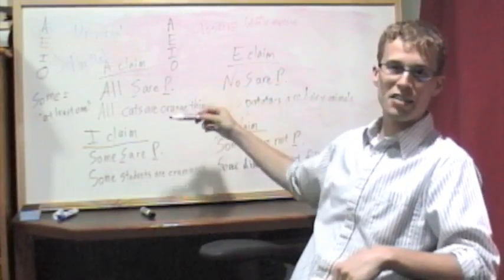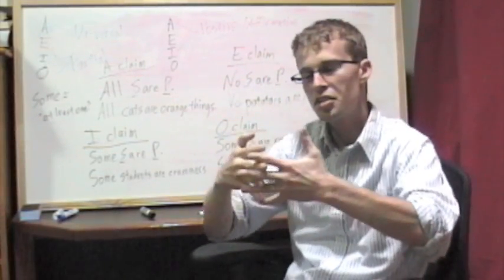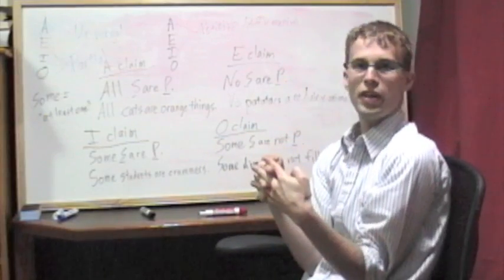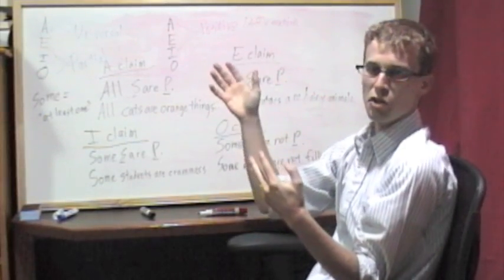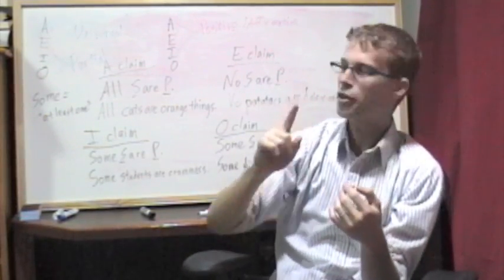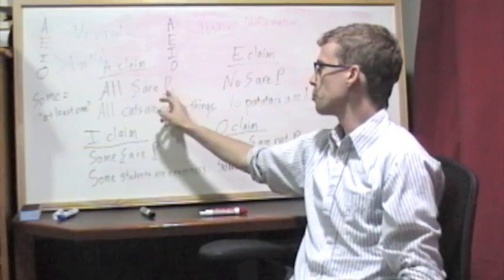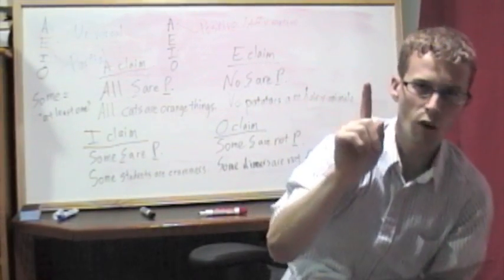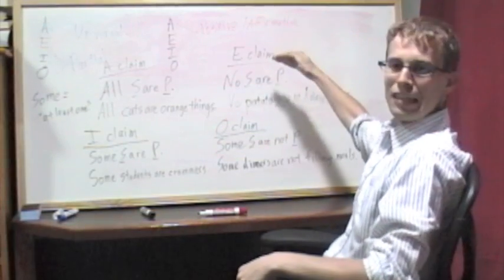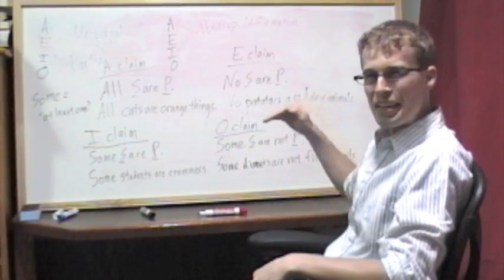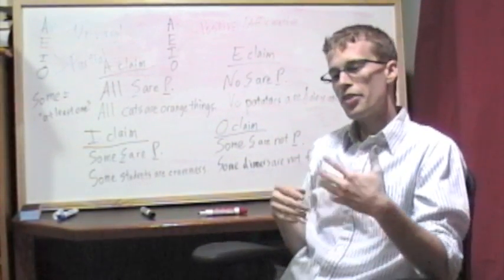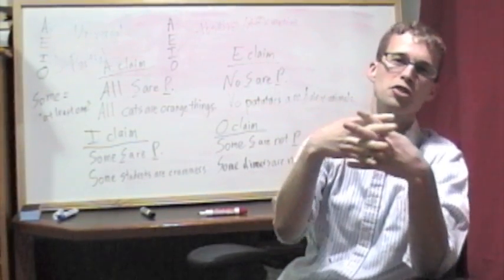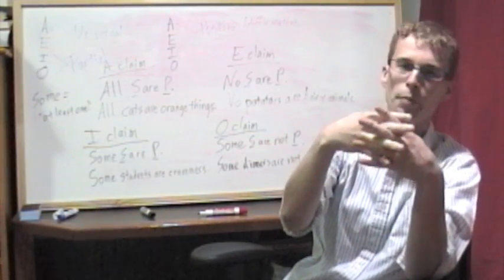Now, unlike the positive claims, which say that there's something in common between at least one thing with the different classes, so there's at least one thing out there that's both an S and a P for an I claim. So it posits that there's that one thing. E claims and O claims, being negative, they say that there is at least one thing that is not something that shares those two properties in common.